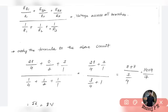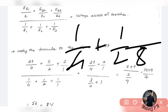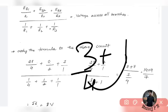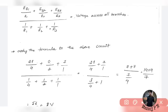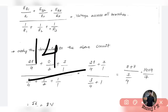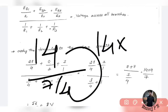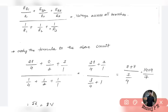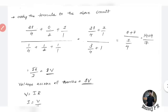Simplifying: the Eb2 term becomes 0. The numerator gives 7 plus 7 equals 14. The denominator: 1/4 plus 1/2 equals 3/4, plus 1 gives 7/4. So the voltage equals 14 divided by (7/4), which is 14 multiplied by 4/7, giving 56/7, which equals 8. The total voltage across all branches is 8 volts.